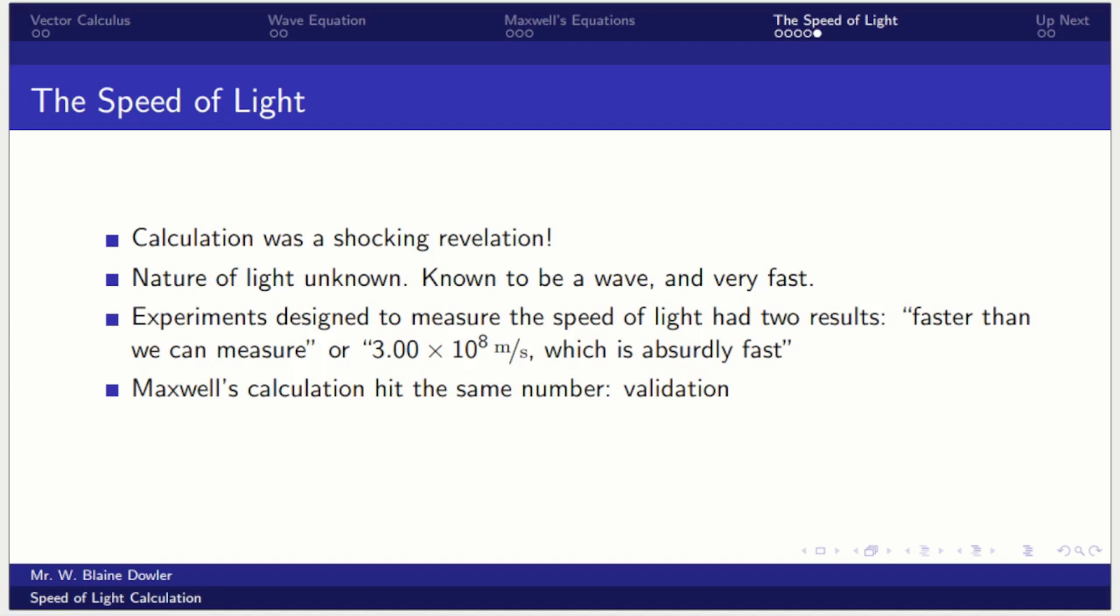So when Maxwell did this calculation and hit the same number, not only did it validate that experiment, but it was a complete revelation because that was when they realized light was an electromagnetic wave. They didn't understand light well enough to know that prior to Maxwell's calculation. So that calculation was a shock. And keep in mind, he ended up being able to calculate the speed of light based on two physical constants only related to how electric and magnetic fields interact with the vacuum. Those are the only two values involved. That is actually going to be vital coming up.